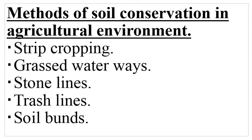The third method is stone lines. Stone lines are various sizes of stones heaped in a line, and remember that all these structures are done on a slope across the hill. The stones are arranged from large size to small size, forming a line. Stone lines help to filter out soil particles and also to slow down the speed of surface runoff.